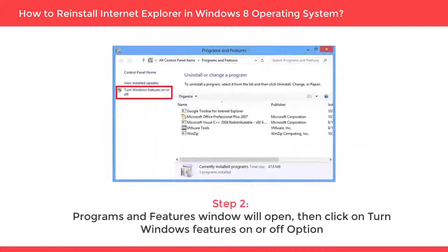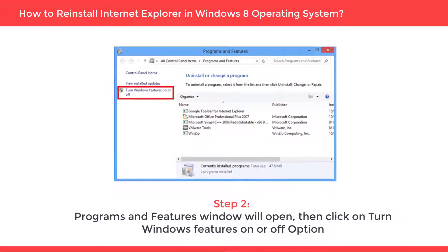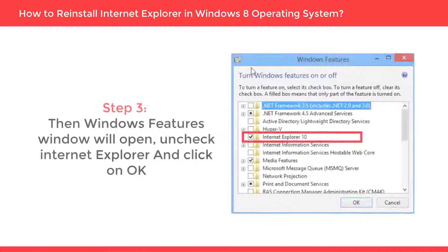Step 2: Programs and Features window will open. Then click on the Turn Windows Features On or Off option. Step 3: The Windows Features window will open. Uncheck Internet Explorer and click on OK.